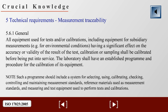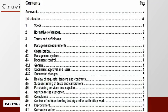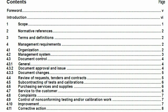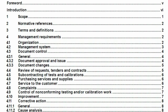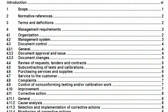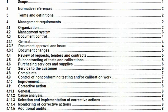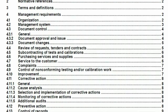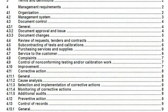The most common nonconformities found for Section 5.6 include using unapproved or non-accredited calibration providers and labs not calibrating equipment prior to putting it into service. Students go over the standard clause by clause and read and hear insightful comments, explanations, and applications relating to the real world of test and calibration labs.